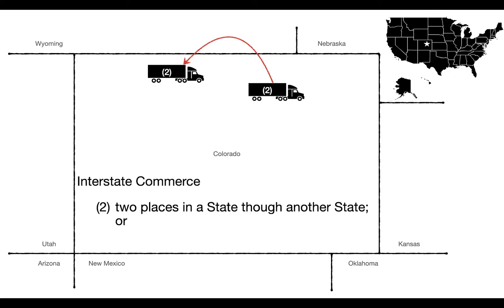Point number two: a company has a driver that goes to two locations within the state, but travels through another state. For example, maybe a mountain highway is shut down and you've got to go around, or a driver visits a family member in another state. If somebody left Denver, Colorado and wanted to get to a mountain town in Colorado but the highways were closed due to forest fires, that truck could go up to Cheyenne or Laramie, cross on Interstate 80, and drop back down into Colorado. Two points within the state, but through another state — that is also designated as interstate commerce.